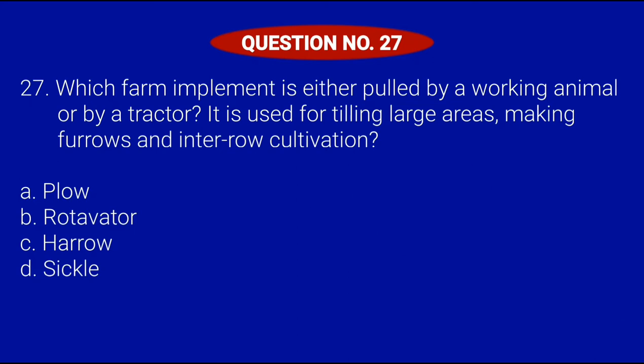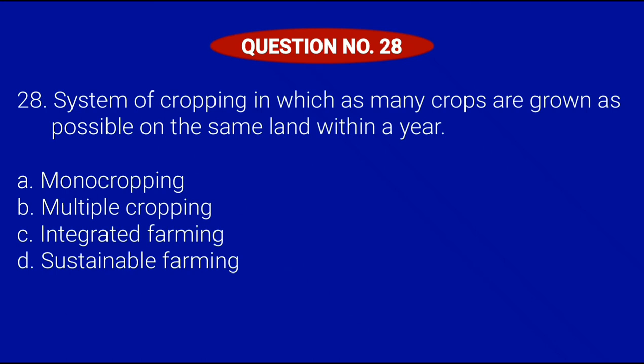Question number 27. Which farm implement is either pulled by a working animal or by a tractor? It is used for tilling large areas, making furrows, and inter-row cultivation. Letter A, Plow; Letter B, Rotivator; Letter C, Harrow; or Letter D, Sickle. Correct answer is Letter A, Plow.